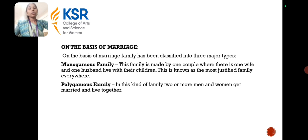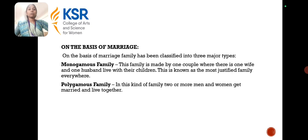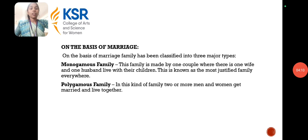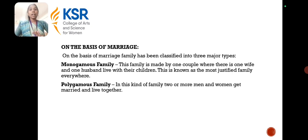On the basis of marriage, families are classified into monogamous family and polygamous family. A monogamous family is one where there is one wife and one husband living with their children. A polygamous family is one where two or more men and women are married and live together.